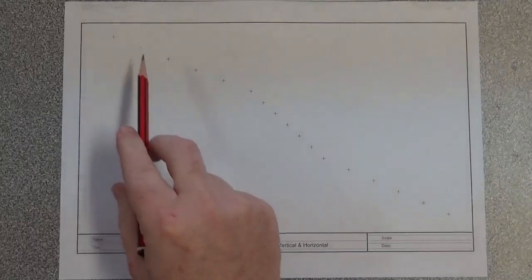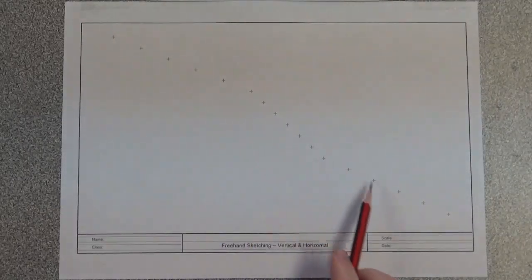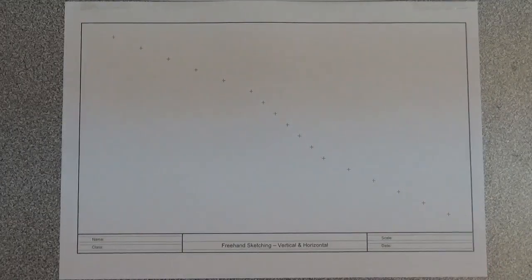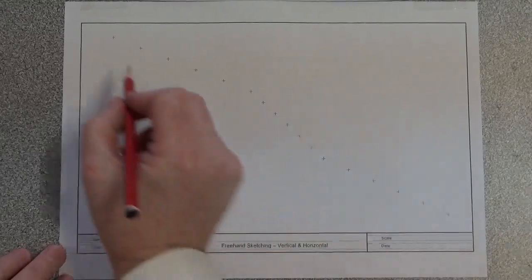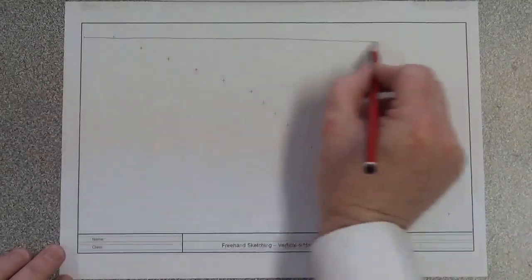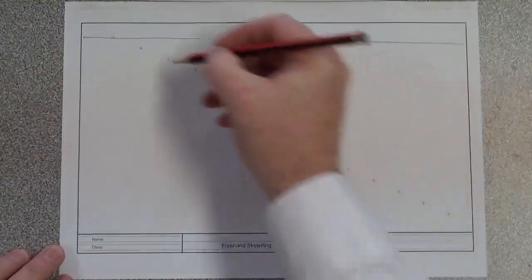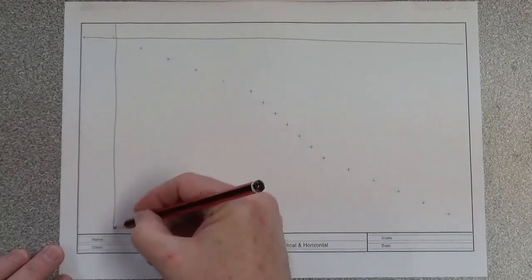Now you'll see that what we have is a series of crosses down the paper here, and the idea is that you're going to draw a line from the left hand side of the paper to the right and from the top to the bottom.